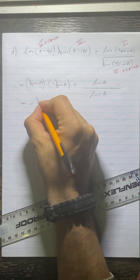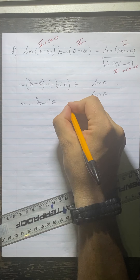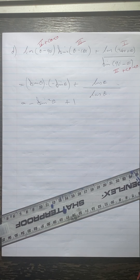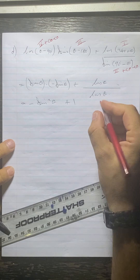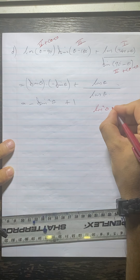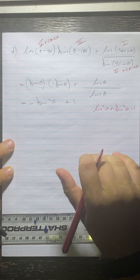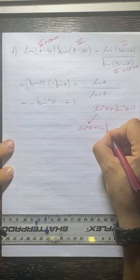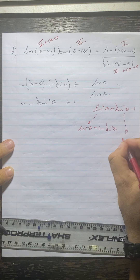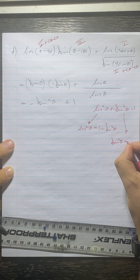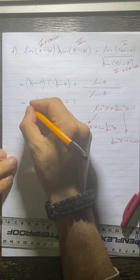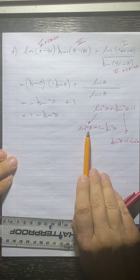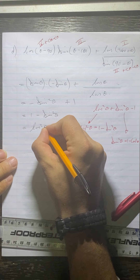This gives us sine theta times negative sine theta plus cos theta, all over cos theta. That gives us minus sine squared theta plus 1, which we can rearrange to 1 minus sine squared theta. From our square identities, cos squared theta equals 1 minus sine squared theta, so this is equal to cos squared theta.